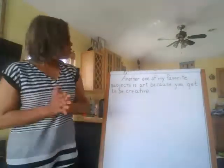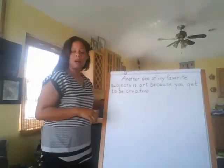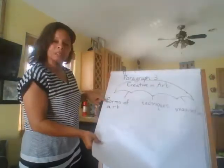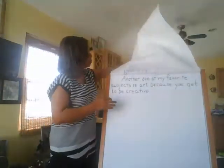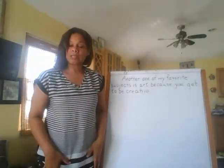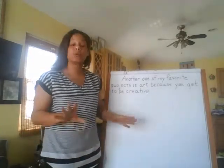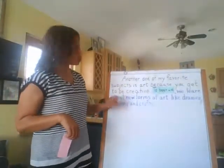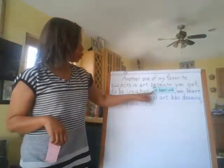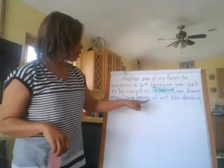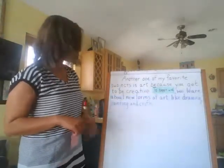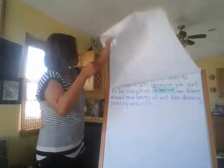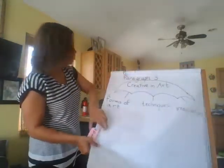So the first thing we have to do now is write our second sentence talking about forms of art. Using our first transition, 'to begin with,' this is the sentence I came up with for supporting detail number one: 'To begin with, we learn about new forms of art like drawing, painting, and crafts.' Next, we're going to supporting detail number two — we're going to be talking about different techniques.